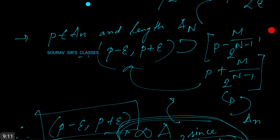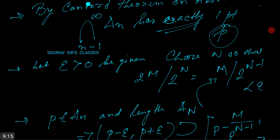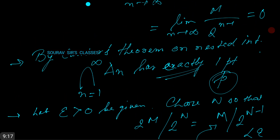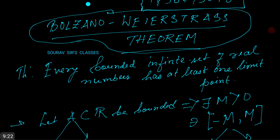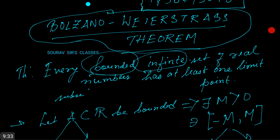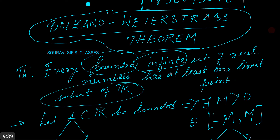This proves that p is a limit point, and p is at least one limit point of every bounded infinite subset of R. Please note the key terms: bounded infinite set of real numbers, which is actually a subset of R. That is it for today, thanks for watching.